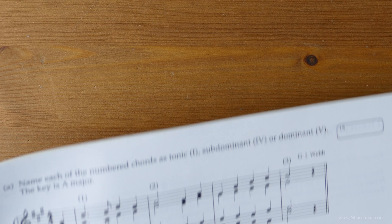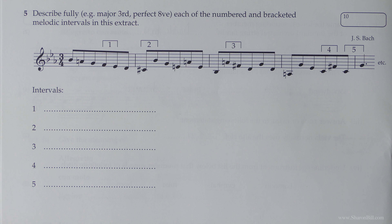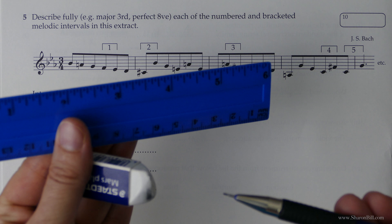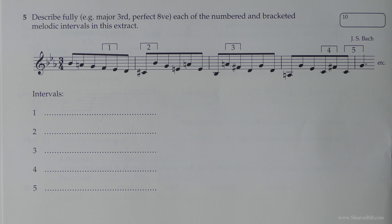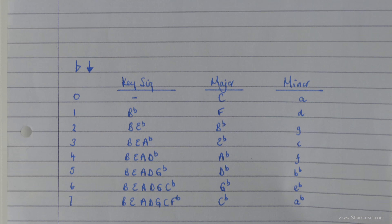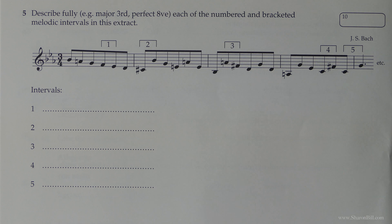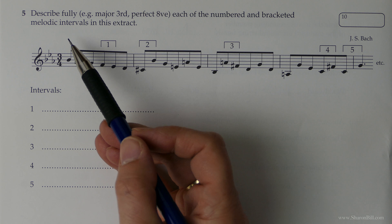So if you turn with me to page 18, Paper C. We're on question five at present. You will need a pencil, eraser, and ruler. I recommend that you just write out your circle of fifths so you've got all of your scales — major and minor keys. If you're not sure about the circle of fifths, you'll find a video link in the description below.